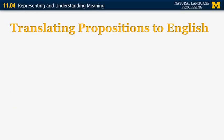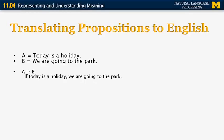Okay, now let's look at the answers to the questions about translating propositions to English. Just to remind you, A is the proposition, today is a holiday. B is the proposition, we are going to the park. So what does A implies B mean? Well, the English translation is, if today is a holiday, we are going to the park.